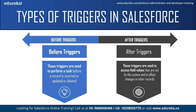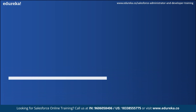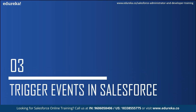After triggers are used to access field values that are already set by the system, such as a record's ID, date, or phone number field, and to affect changes in other records as well. These triggers are usually used to update or validate record values after they are saved to the database. Also, after triggers are read only — you cannot make any changes to them. So these were the two types of triggers in Salesforce.